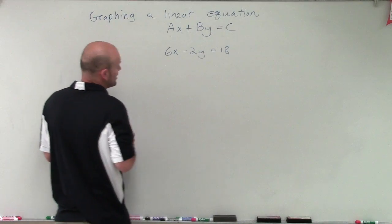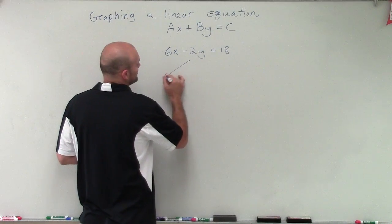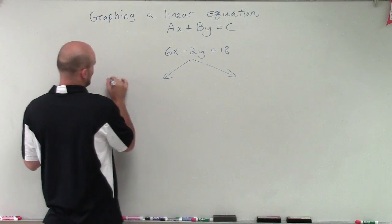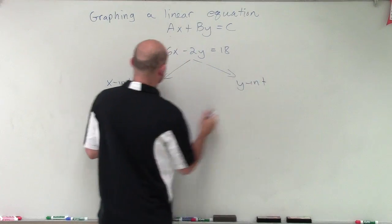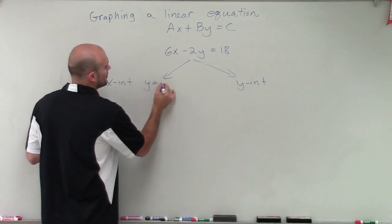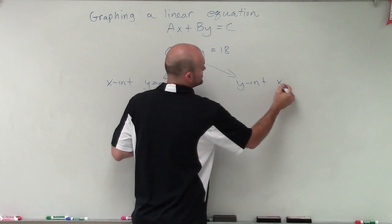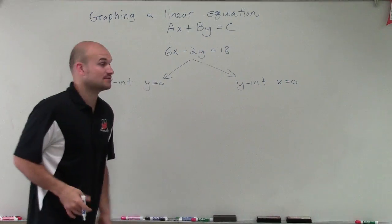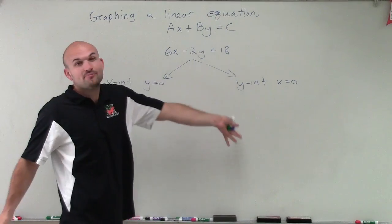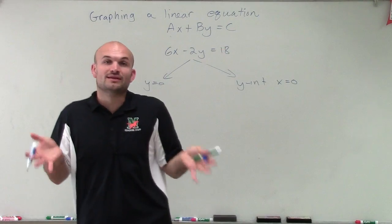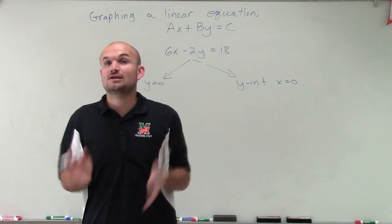So remember, when we're doing our x and y intercepts, we want to determine what the x-intercept is and what the y-intercept is. So the x-intercept is y equals 0, and y-intercept is when x is going to equal 0. So then to solve for this, all we're simply going to do is plug in 0 in for y and then plug 0 in for x. And then that will help us find our x and y intercepts. Then we can easily connect our two points.